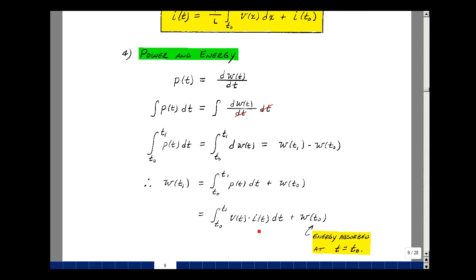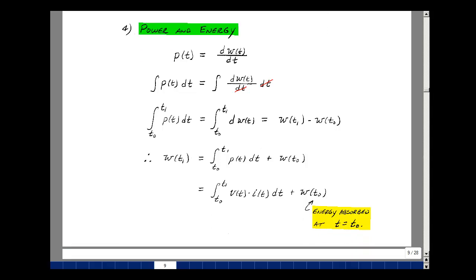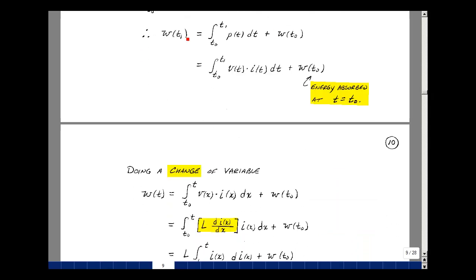What is power? Well, it's voltage times current as we've defined it. This initial condition is the energy absorbed by the inductance at t equals t0. Do a change of variable replacing t1 by t. T1 is now t, replacing t by x here as a dummy variable.